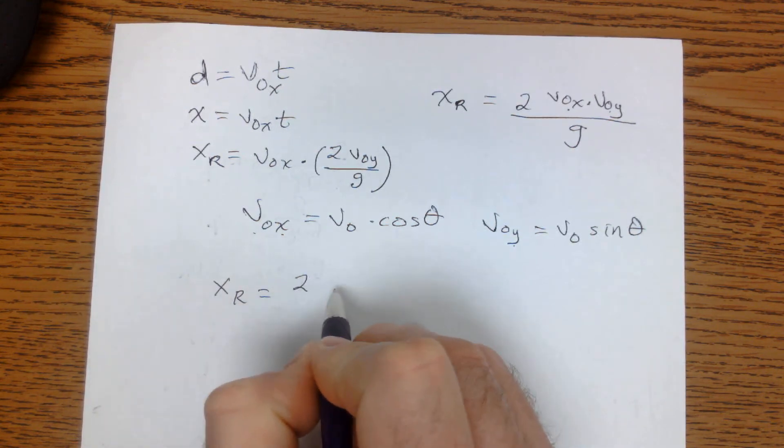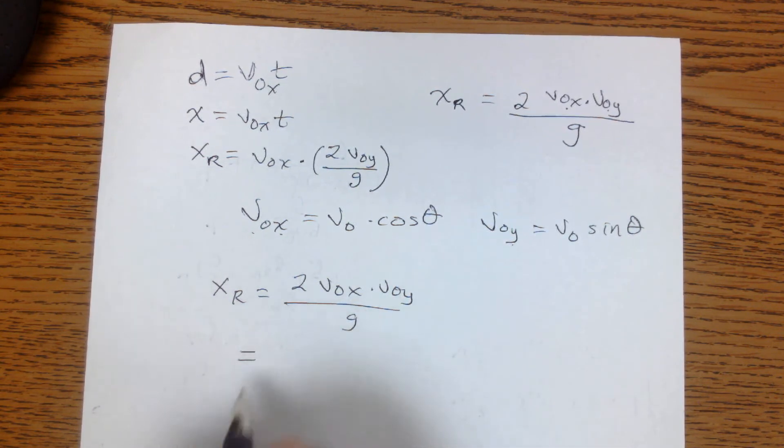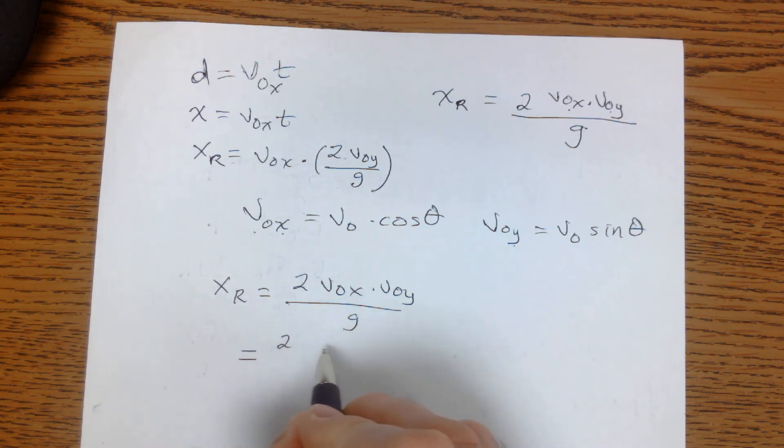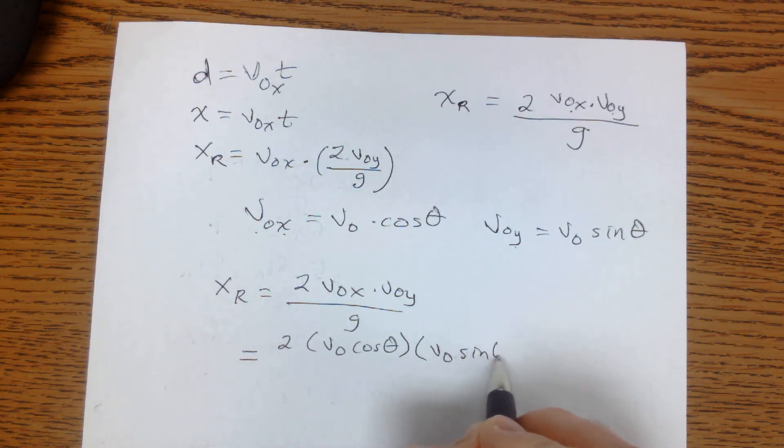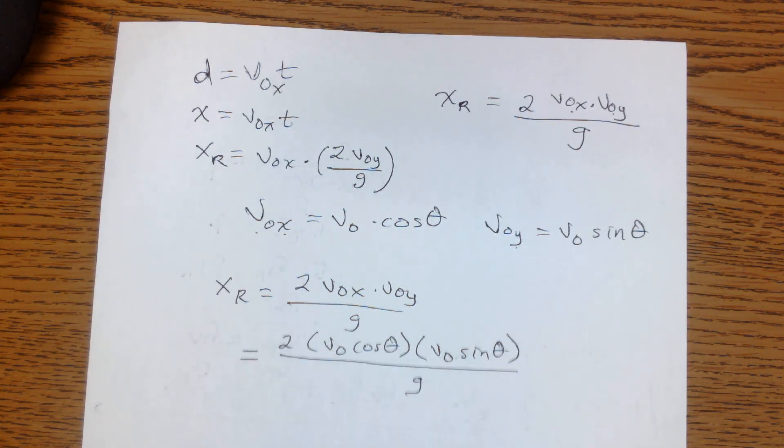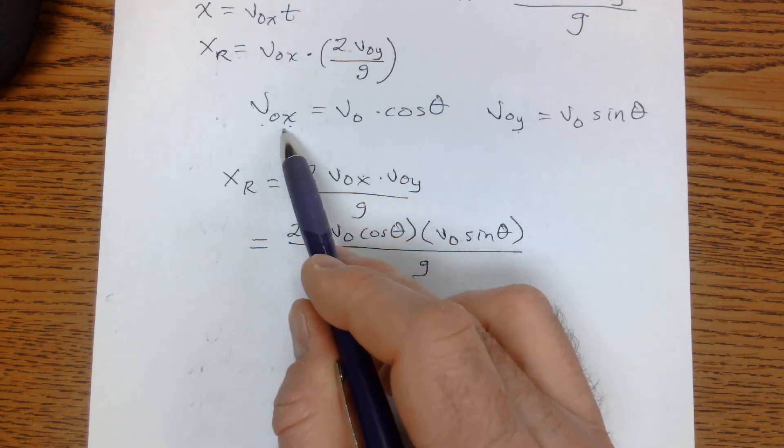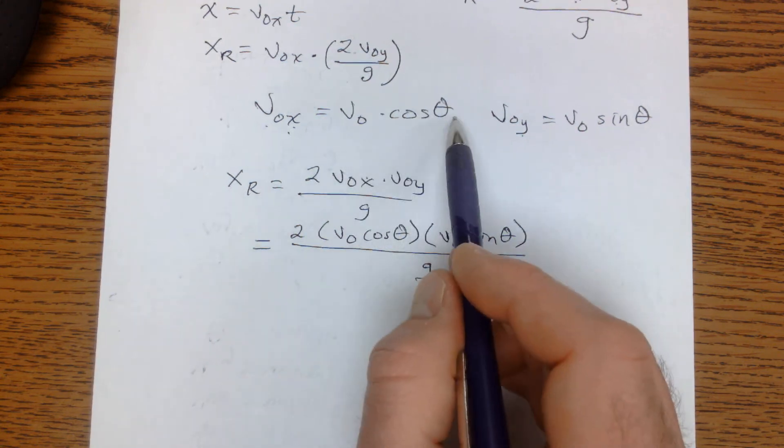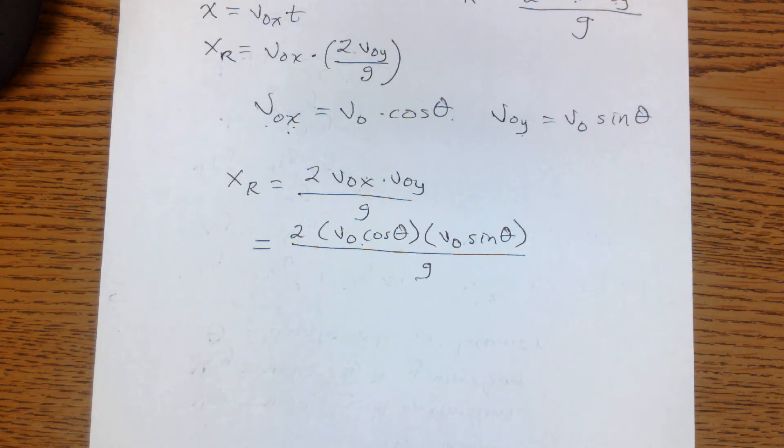xr equals 2 times v0x times v0y all over g and we'll substitute in. So it's 2 times v0 cosine theta times v0 sine theta all over g. And again, here's the v0x and all we did was we substituted in the v0 cosine theta right there.